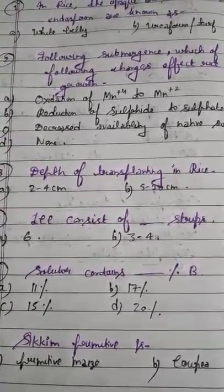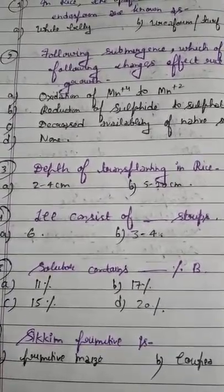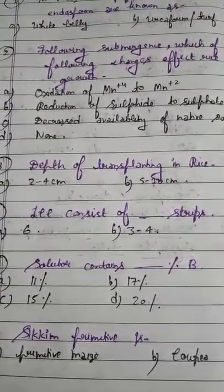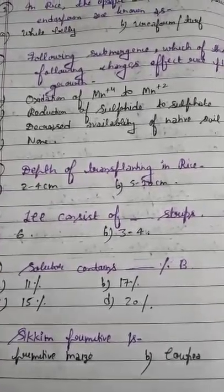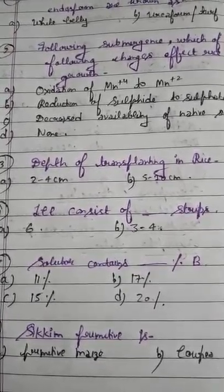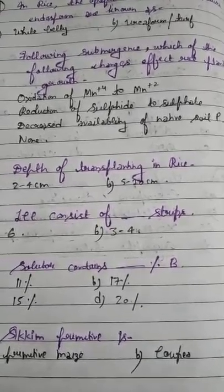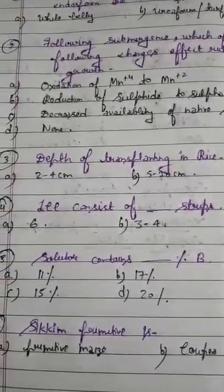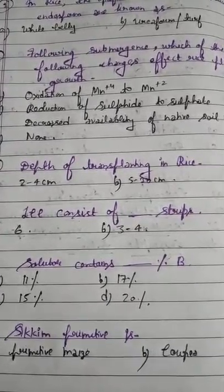Question 2 is very important. Following submergence, which of the following changes affect rice plant growth? When you are growing transplanted rice and have submerged your field, which of the following changes can happen? Option A: oxidation of Mn4+ to Mn2+. Option B: reduction of sulfide to sulfate. Option C: decrease in availability of native soil phosphorus. Option D: none.